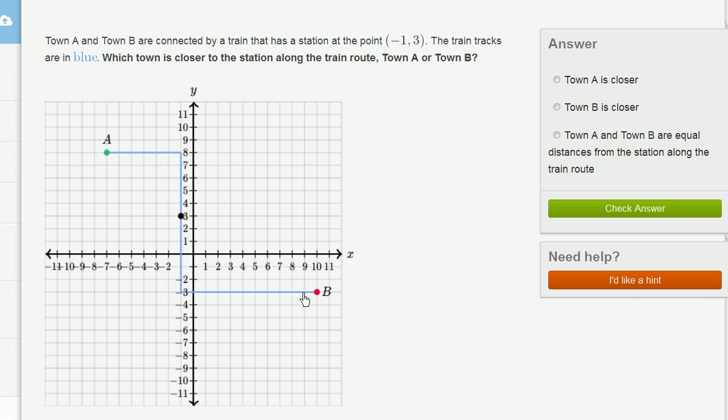If you're going from B, you're going 1, 2, 3, 4, 5, 6, 7, 8, 9, 10, 11 along the x direction. And then 1, 2, 3, 4, 5, 6. So 6 along the vertical direction. So you're going to go total 17. So it's pretty obvious that A is closer along the tracks.